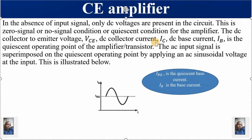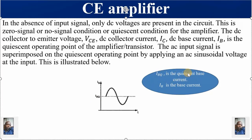Under quiescent conditions we have the following DC values: collector-to-emitter voltage, DC collector current Ic, and DC base current IB. When we feed an AC input signal to the transistor, it is superimposed on the zero signal or quiescent condition by applying an AC signal voltage at the input. The base current IB is plotted against time. When we feed an AC signal, it is superimposed on the quiescent operating point IBQ — the quiescent base current, which is the no-signal or zero-signal base current.